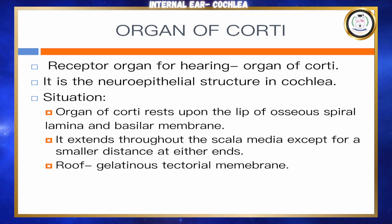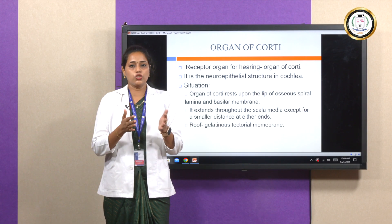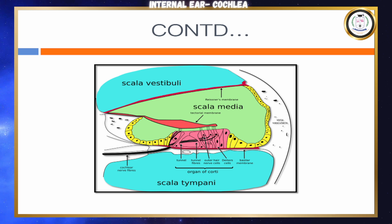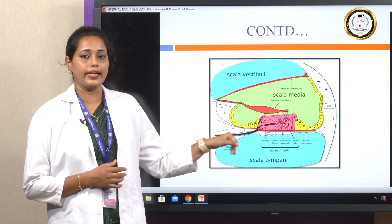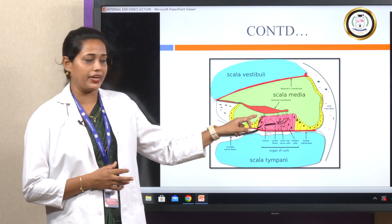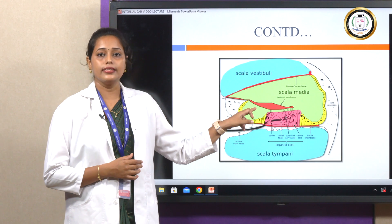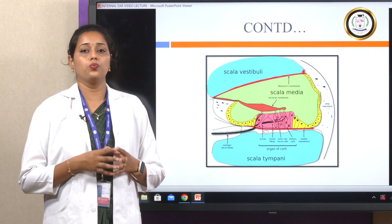The organ of Corti is the receptor organ for hearing. It is a neuroepithelial structure in the cochlea — that is, tissue composed of sensory cells. It lies on the lip of the osseous spiral lamina and the basilar membrane, extending throughout the scala media. The roof of the organ of Corti is the tectorial membrane. It contains two types of hair cells — inner hair cells and outer hair cells — which are receptor cells that carry information to the brain via the cochlear nerve fibers.